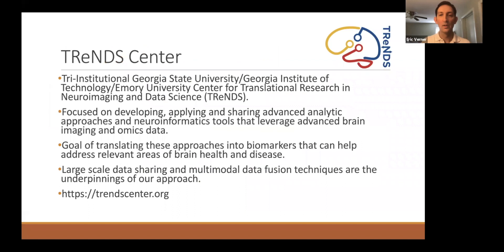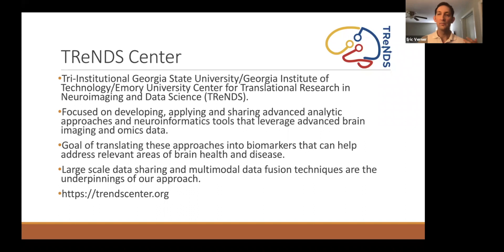Let me introduce the Trend Center — the Center for Translational Research in Neuroimaging and Data Science. It's a tri-institutional effort from Georgia State University, Georgia Institute of Technology, and Emory University, located in Atlanta, Georgia. Our focus is on neuroimaging, specifically machine learning and signal processing on neuroimaging data, with the goal of translating our work into biomarkers that can help treat or learn about brain health and mental health disorders. We also do multimodal data fusion and large-scale data sharing like CoinStack.